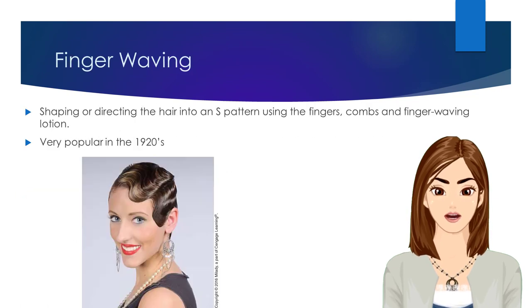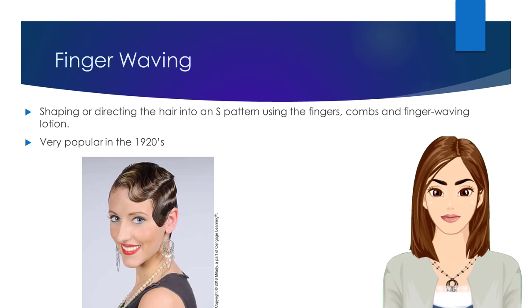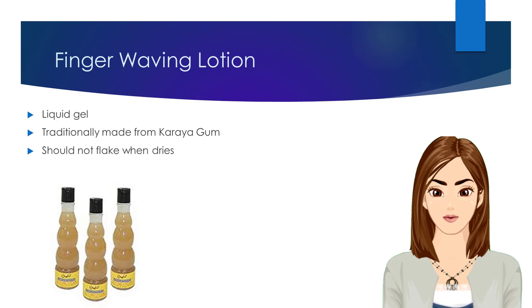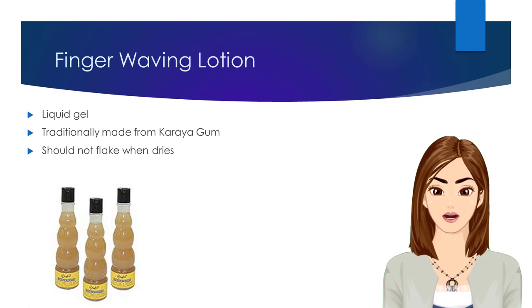Finger waving provides the stylist the ability to learn how to control, push, pull, and manipulate the hair into the directions we choose for it to go, as opposed to just allowing the hair to behave how it naturally intends to. Finger waving lotion is a liquid gel that is traditionally made from coria gum. A proper finger waving lotion should not flake when it is dried.